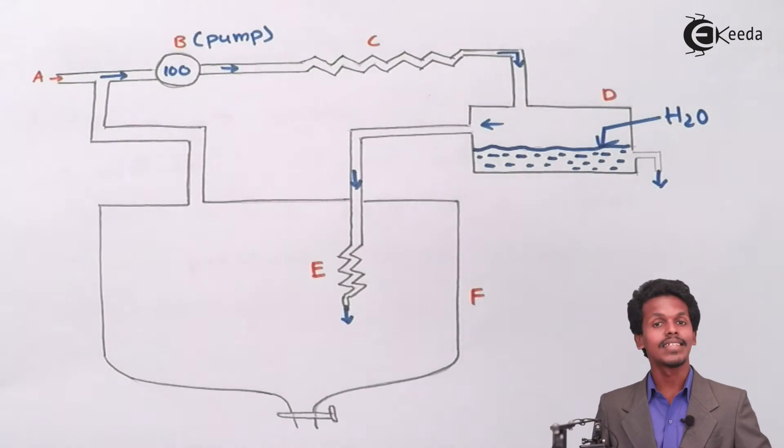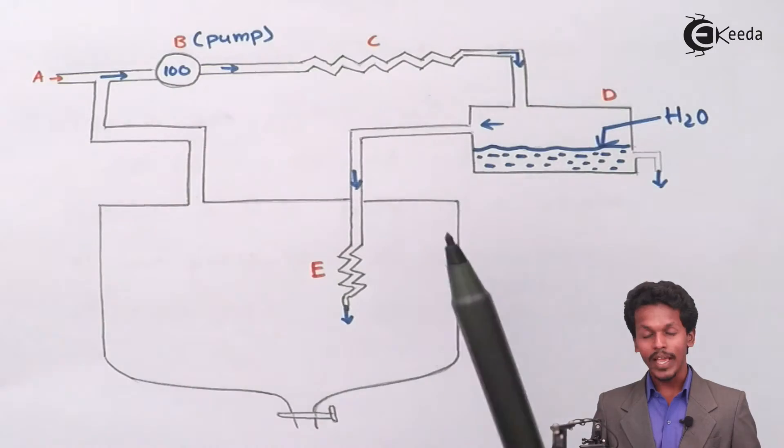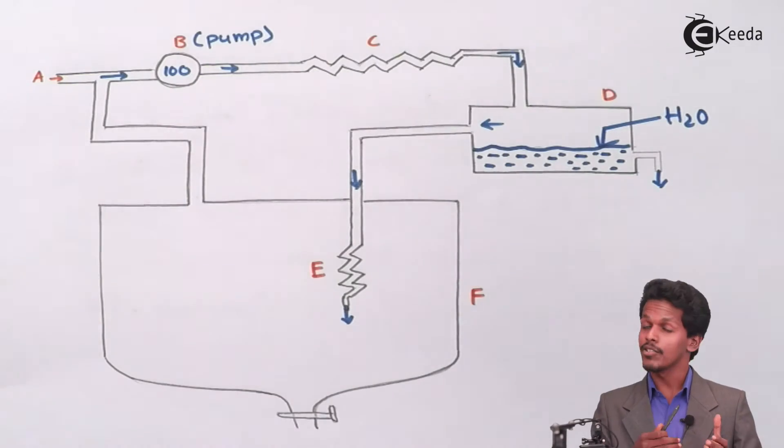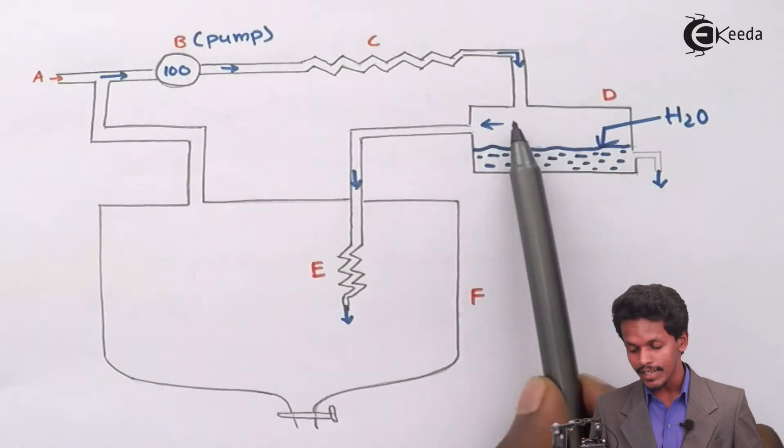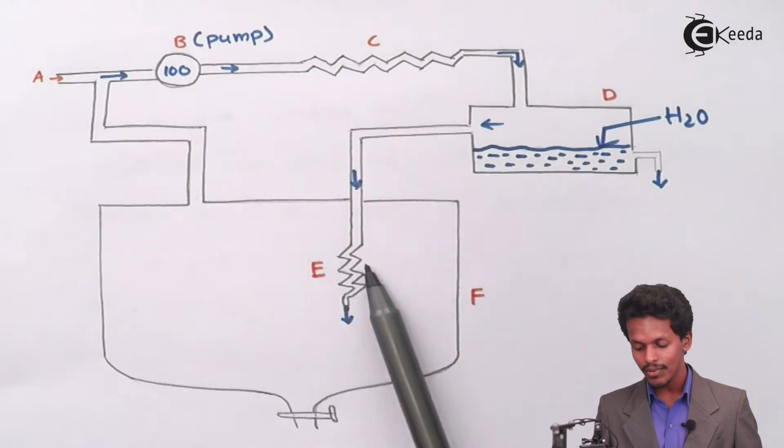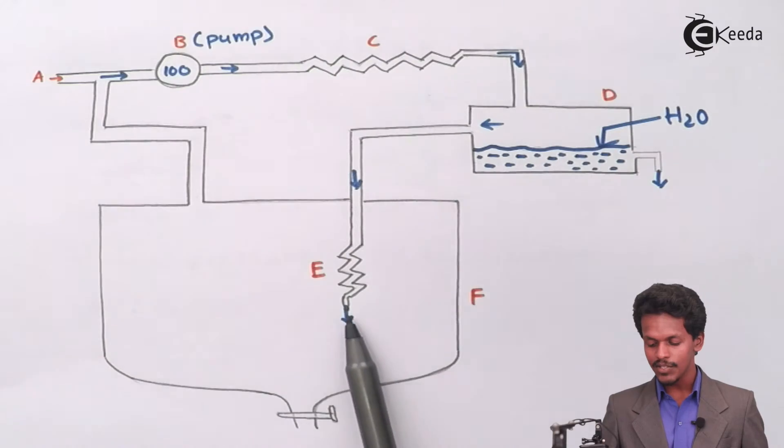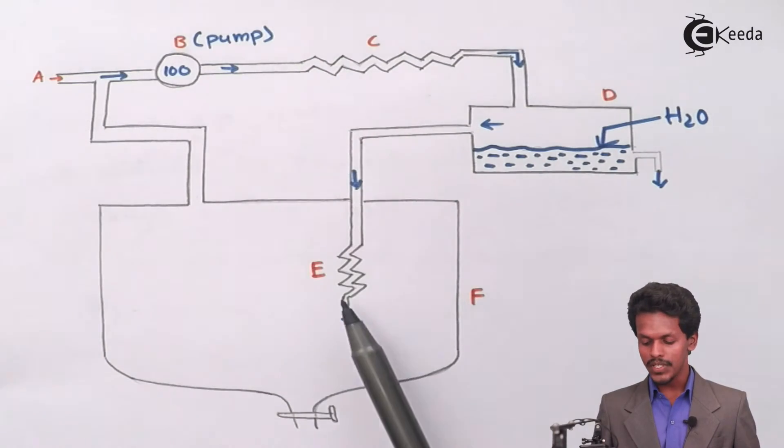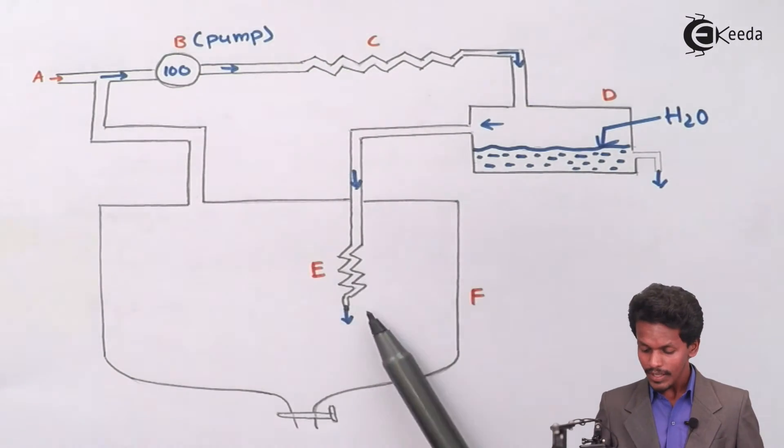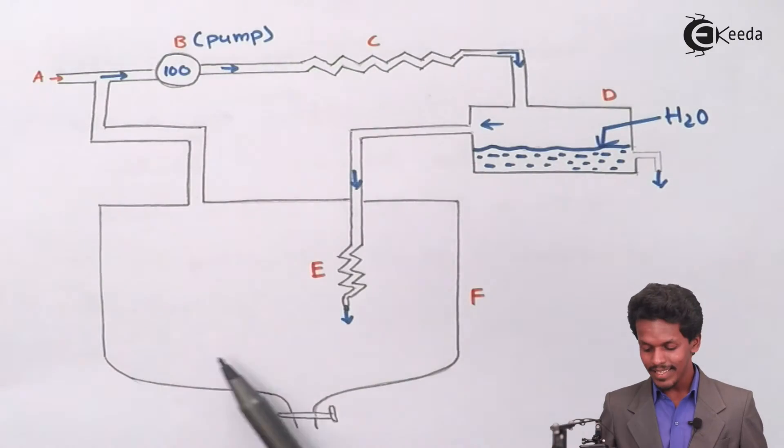But the gas is not being liquefied yet. There will be the presence of air which is now out of H₂O because we have removed the H₂O from the overall air. The air will be passed through this coil. This coil is basically made up of copper. This copper coil has a small hole in it.